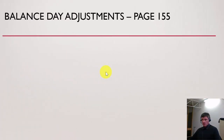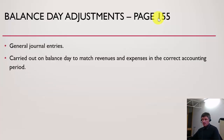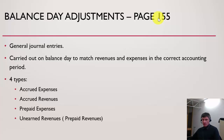Balance day adjustments — I also forgot to mention that with all these I have included page references to your textbook, Accounting Concepts and Applications by Greg Mackay, Beaumont and Sagna. These are general journal entries made on balance day to match revenues and expenses in the correct accounting period. That's really important. There are four types: accrued expenses, accrued revenues, prepaid expenses, and unearned revenues — sometimes also called prepaid revenues.